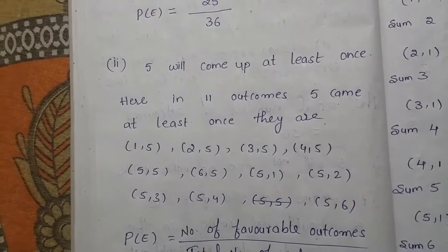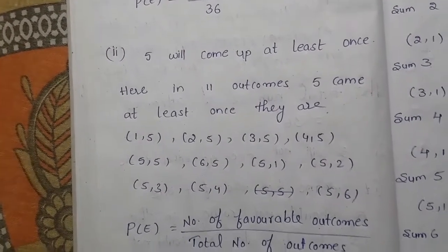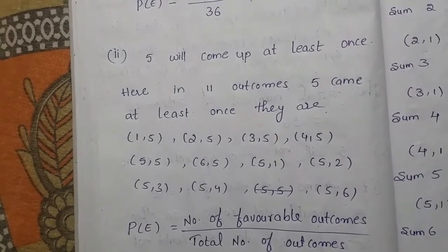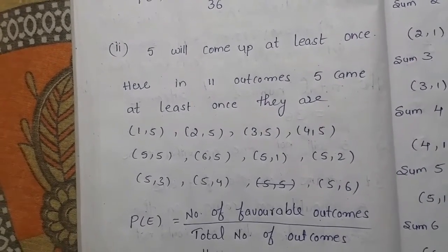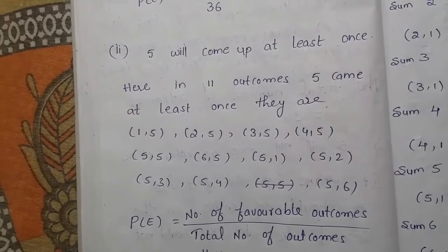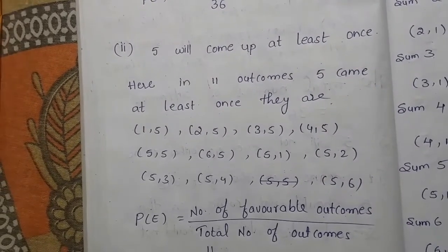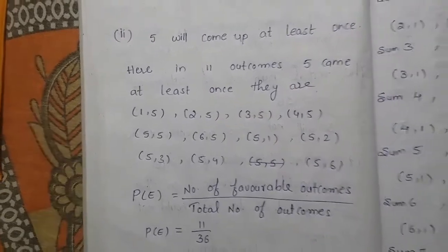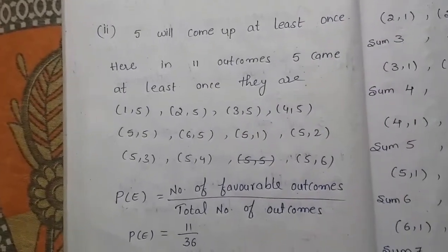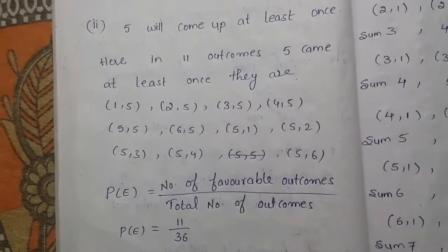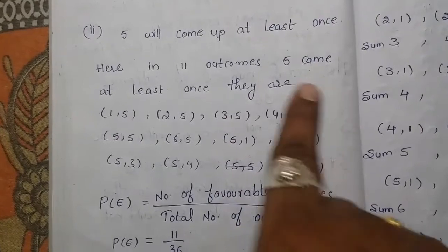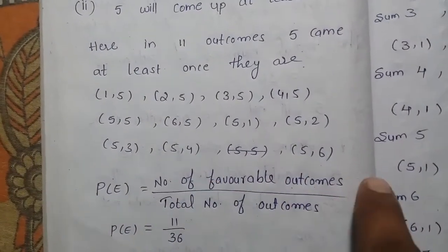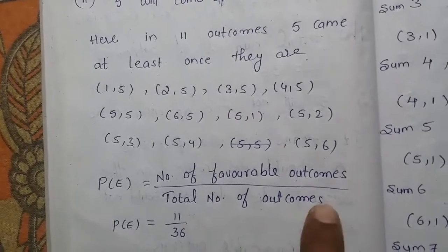For the second question, 5 will come at least once. In 11 outcomes, 5 appeared at least one time. These are: (1,5) (2,5) (3,5) (4,5) (5,5) (6,5) (5,1) (5,2) (5,3) (5,4) and (5,6). In all these outcomes, 5 came at least once, so these are the favorable outcomes.